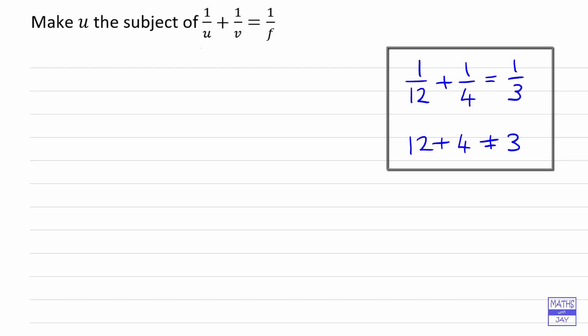The thing is, when you've got letters it can be tempting to think, oh yes, we've got one over U plus one over V is one over F, so U plus V is F, but it isn't. That's the reason I've shown you this example involving numbers. It's not as straightforward as just getting rid of the one overs.